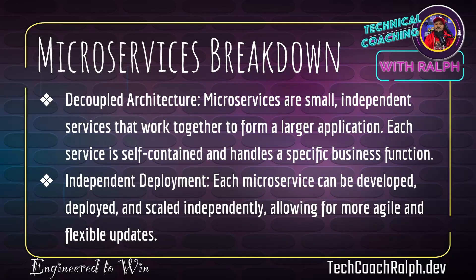Microservices have a decoupled architecture. Microservices are small, independent services that work together to form a larger application. Each service is self-contained and handles a specific business function. And as we get into our case studies, you'll get a better understanding of how that actually works.